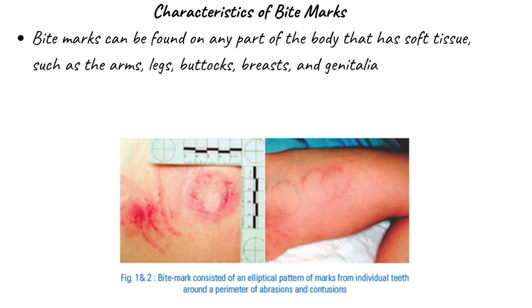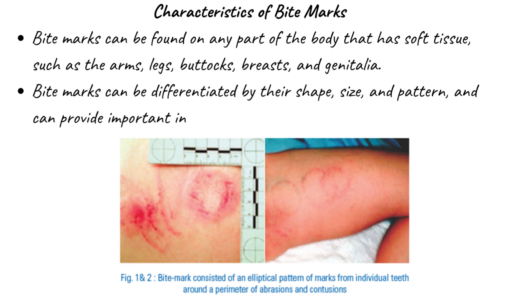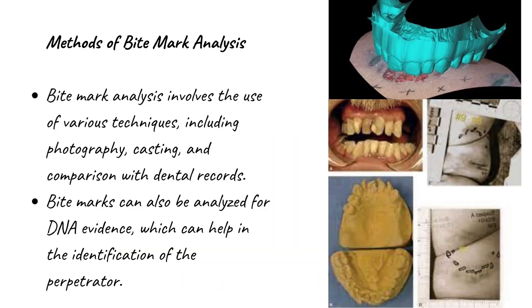The characteristics of bite marks, such as their shape, size, and pattern, can be used to differentiate them and provide important clues about the individual who inflicted them.